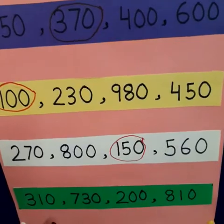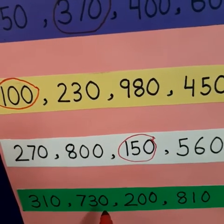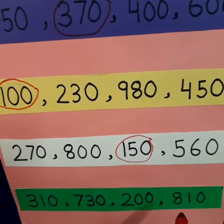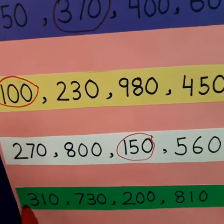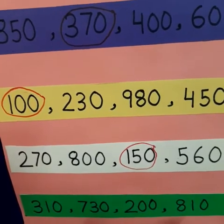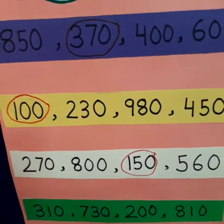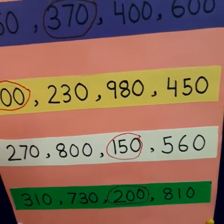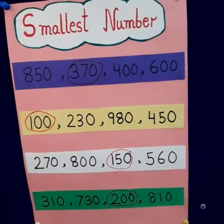Next row, we have the numbers 310, 730, 200, and 810. Now we will see the digit at the hundreds place: 3, 7, 2, and 8. Which one is the smallest? Yes, 2. So 200 will be the smallest number. It is so easy to find out the smallest number.